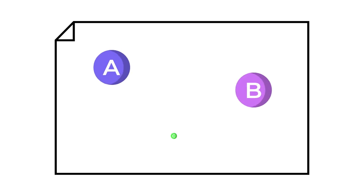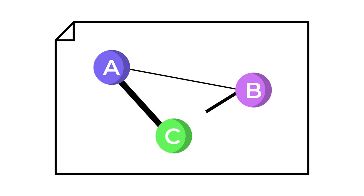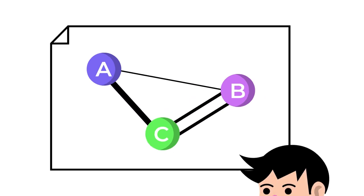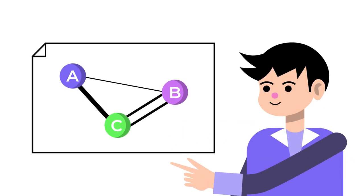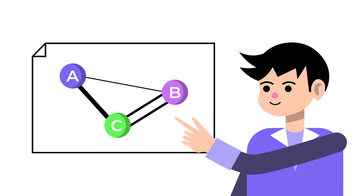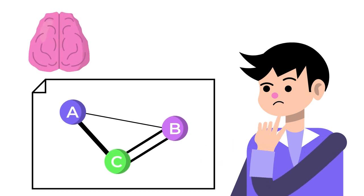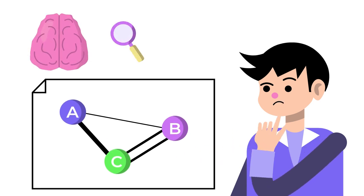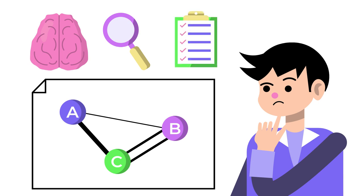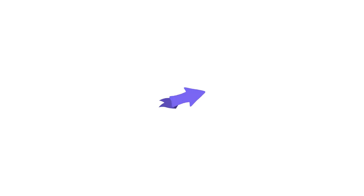Graphic organizers are tools that can help you see connections and relationships visually, which makes them very useful for visual learners. Graphic organizers are used to facilitate brainstorming, analysis, and evaluation of support before you begin to write. The type of graphic organizer that you will use will depend on what you want to do.